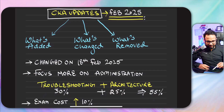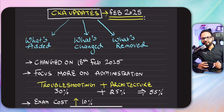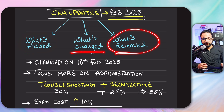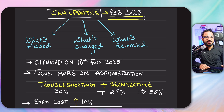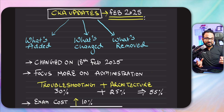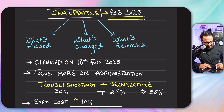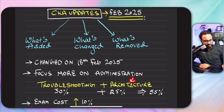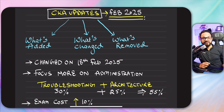The changes happened on 18th of February and I'm going to discuss majorly about what's added, what's been changed, and what's removed. There are not a lot of things that have been removed, but they have added a pretty decent number of topics. Now it focuses more on the administration side of Kubernetes. The focus is mostly on troubleshooting and architecture — 30% of the exam questions will be based on troubleshooting and 25% will be based on architecture, so a total of 55% will be based on troubleshooting and architecture as per their new curriculum.